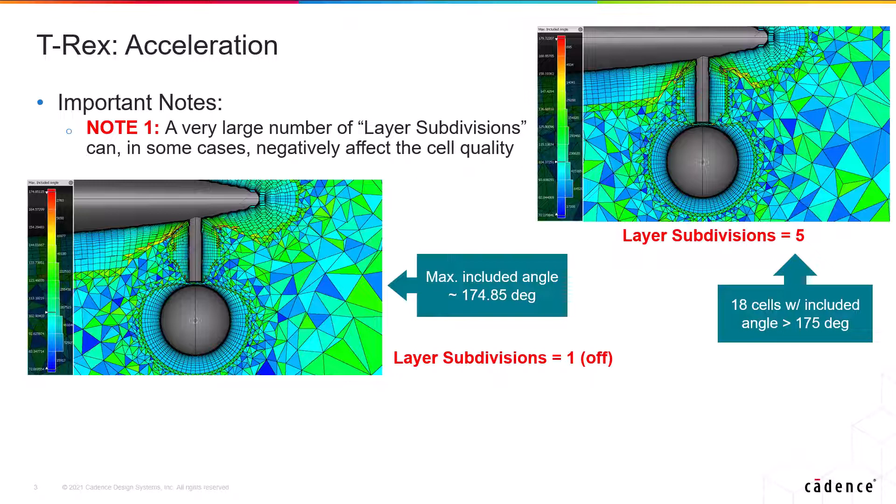So if we really push the acceleration toward performance, we might see some cell quality degradation. For example, in the case of the wing pylon store, with the original settings, none of the cells actually have a max included angle greater than 175 degrees.